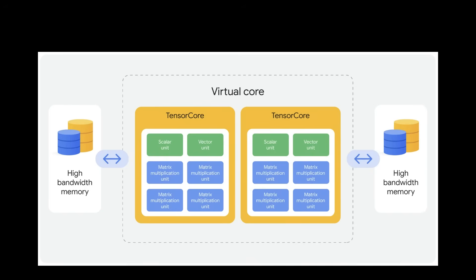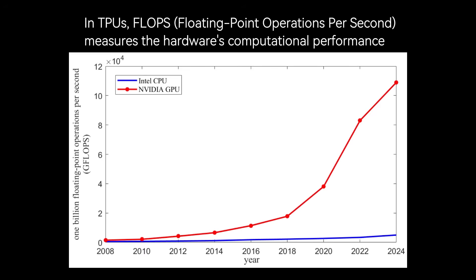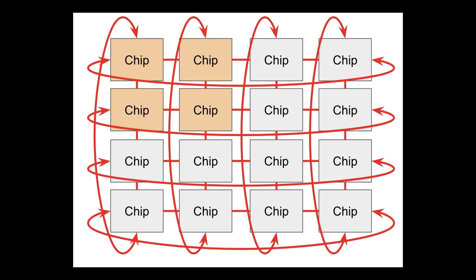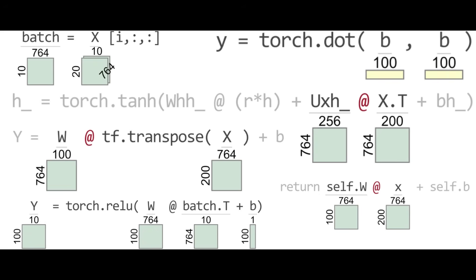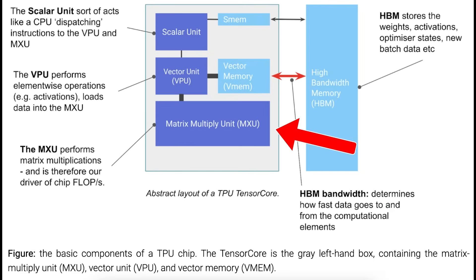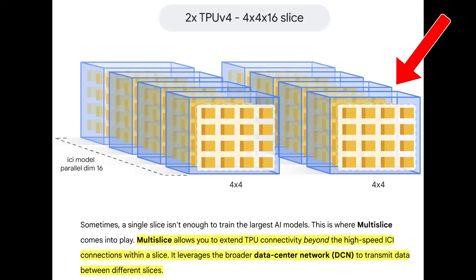By minimizing off-chip memory access and avoiding unnecessary general-purpose hardware, TPUs achieve much higher FLOPs per watt — where FLOPs, or floating-point operations per second, measures the computational speed of AI hardware. The essence of TPU architecture is a hardware-software co-design that strips away general-purpose flexibility to focus entirely on dense tensor math. TPU systems scale from individual chips with MXUs, up to pods, slices within pods, and even across data centers with multi-slice, each leveraging high-speed interconnects for efficient communication.